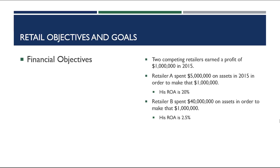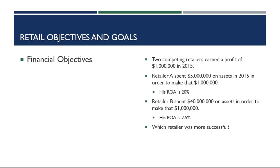Retailer B's ROA is 2.5%. So both retailers made $1 million in the same year — Retailer A spent $5 million, Retailer B spent $40 million. So which retailer is actually more financially successful? The answer is Retailer A. Retailer A had a much higher ROA, and when you're a retailer, you want that higher ROA because it shows you are using your assets more effectively to make money.